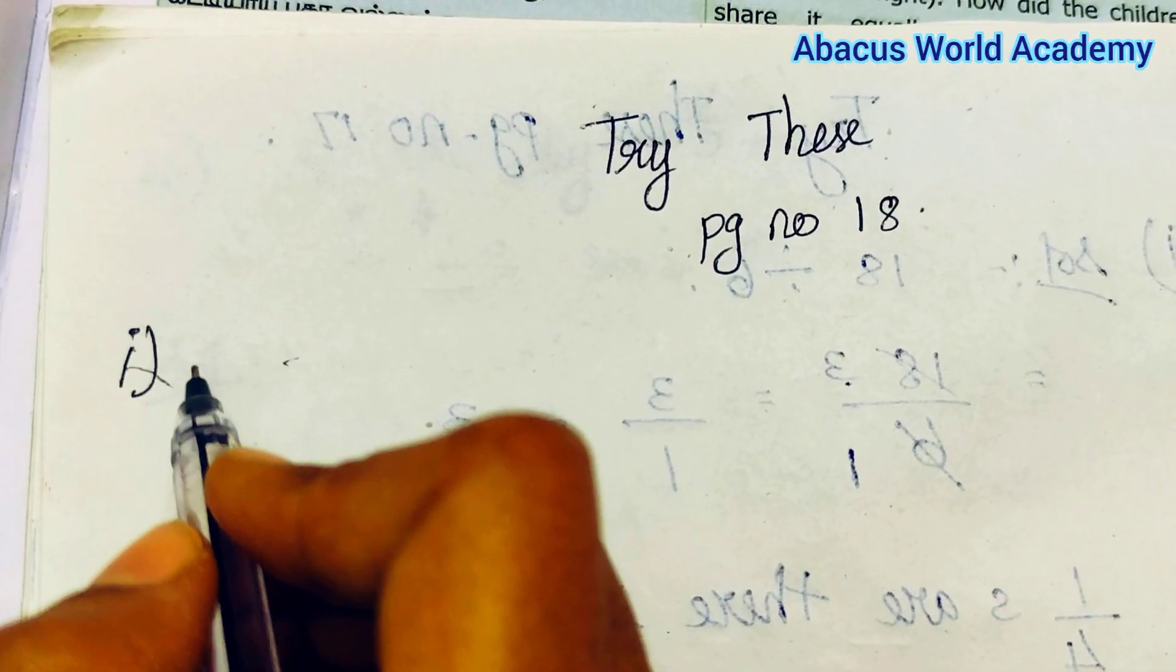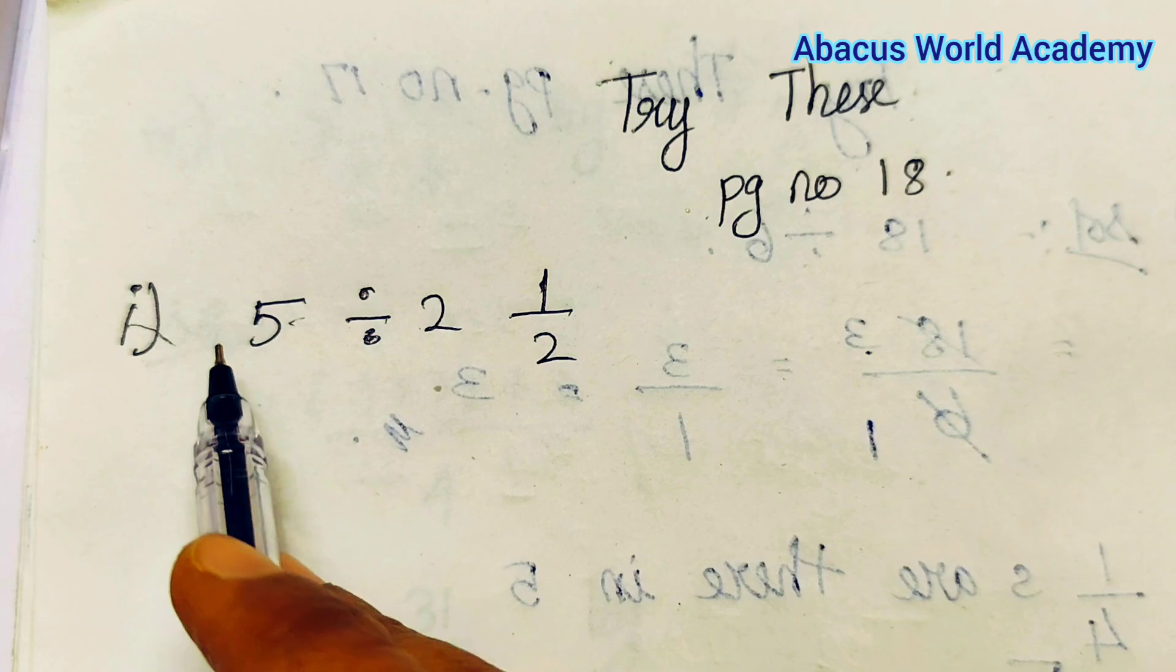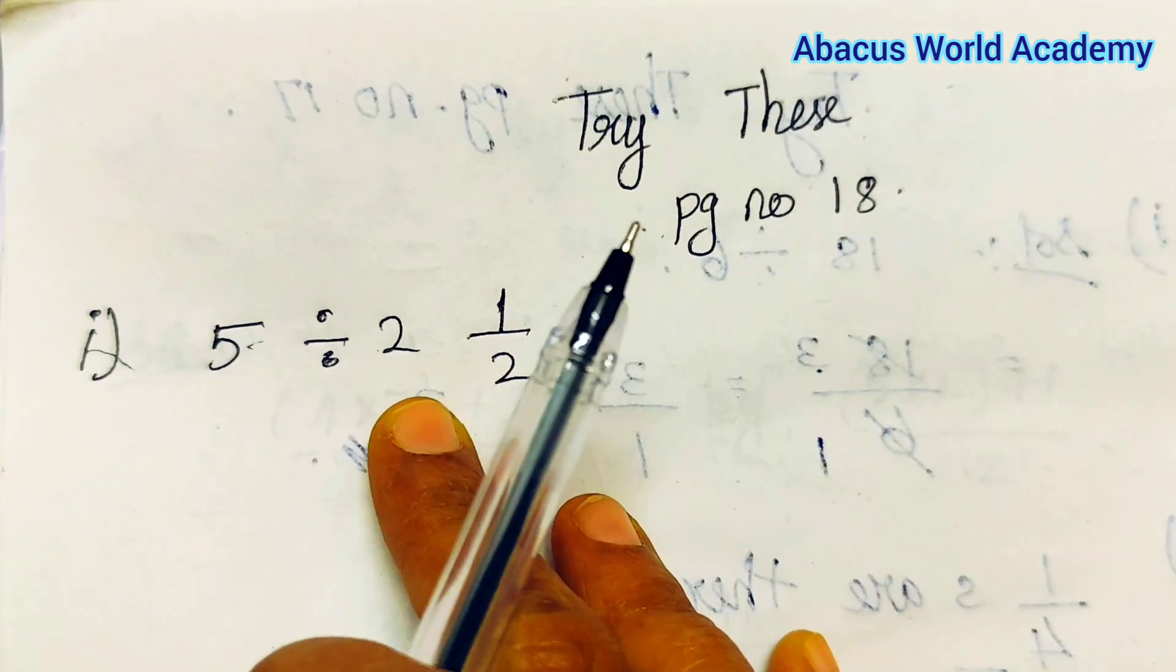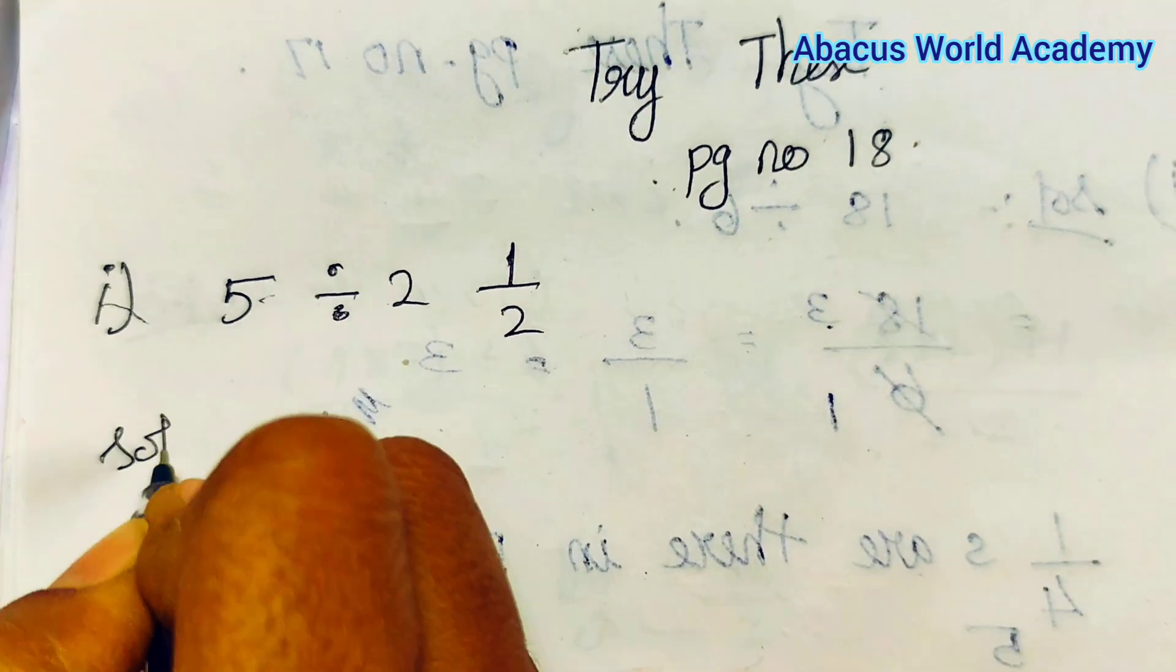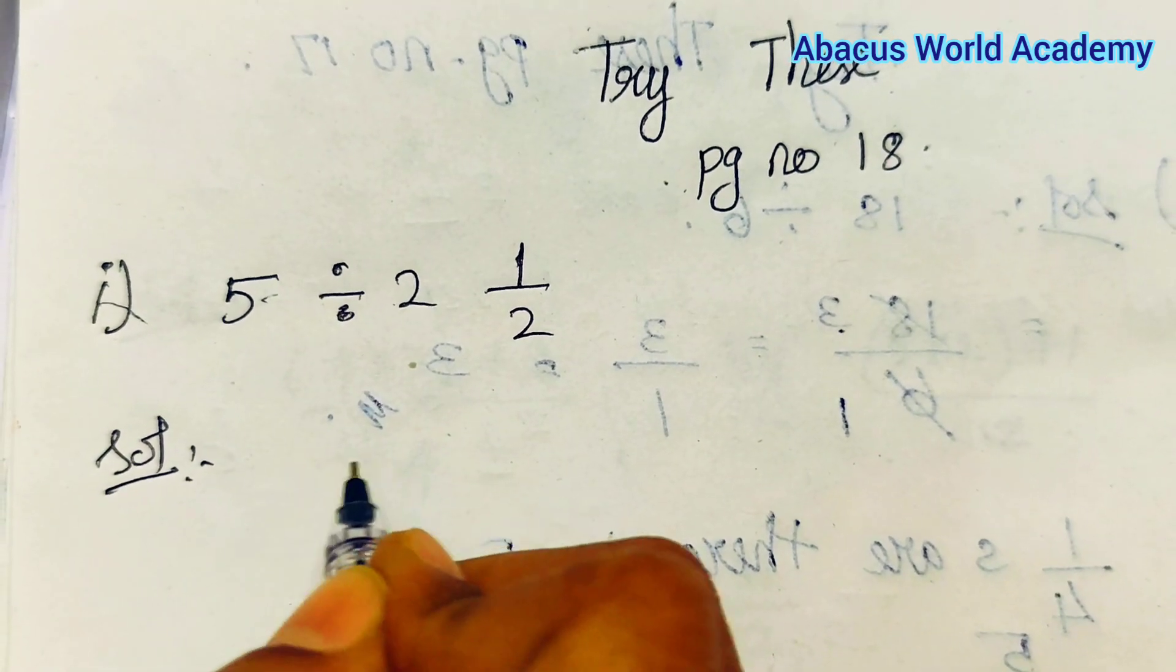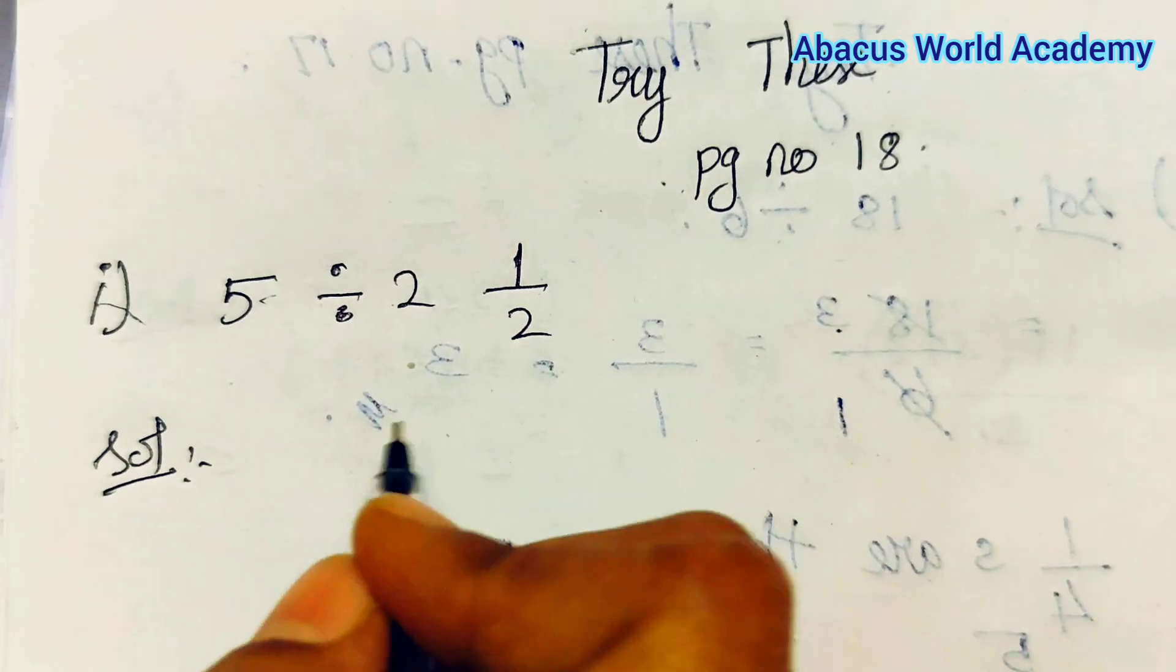Try this page number 18. So first sum: 5 divided by 2 and 1/2. Solution: so 5, okay. In the mixed fraction you convert.